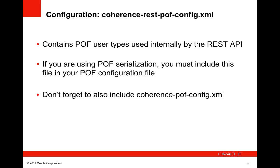The second configuration file is coherence-rest-pof-config, which contains the registration of POF user types used internally by the REST API. If you're using POF serialization, you must include this file in your POF config file. Also don't forget to include coherence-pof-config.